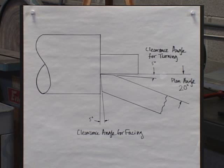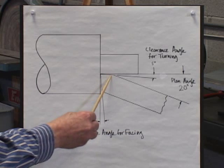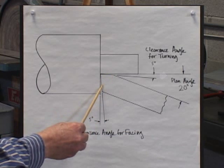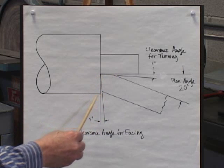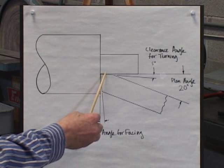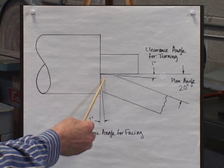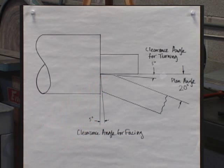These clearance angles dictate that the tool has a negative lead angle. Having negative lead angles for both turning and facing means that the included angle is less than 90 degrees — in this case 80 degrees — and allows us to get in here and create a sharp 90 degree corner. We can clean the corner up completely, and furthermore we can undercut by plunging slightly in either direction if we need additional clearance there.